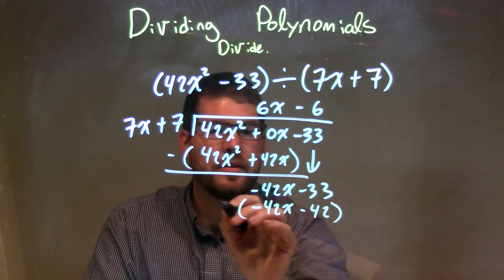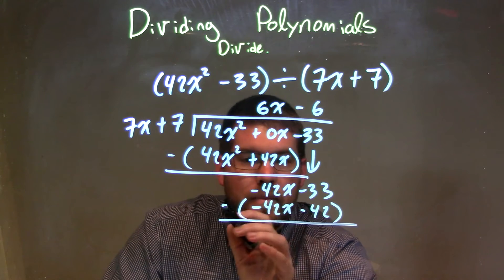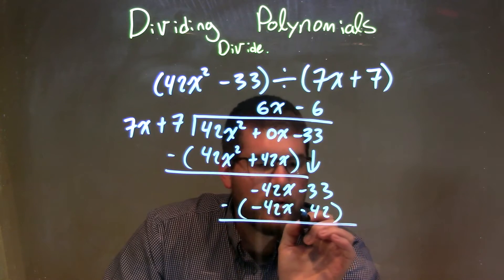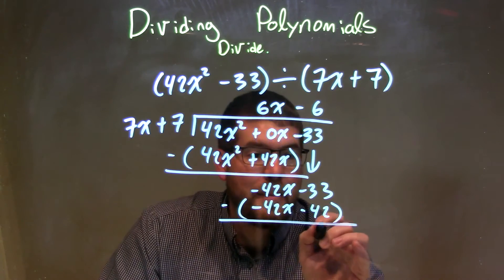But now I need to subtract the two. Then it eliminates, right? Negative 42x minus a negative 42x is adding a positive 0. Negative 33 minus a negative 42 is adding a positive 42, and that comes out to be a positive 9.